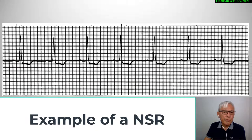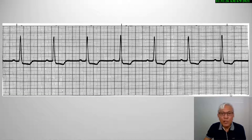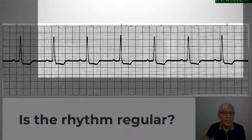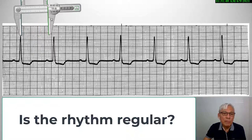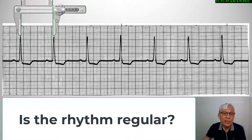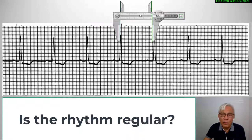Let's apply the criteria for normal sinus rhythm in this ECG strip. The first step is to determine its regularity. If we visually examine the regularity of this rhythm, we can conclude that it is regular. But utilizing a caliper, let's determine its regularity by putting the caliper from the tip of one R wave to the next R wave, and it looks like it is going to be a regular rhythm.